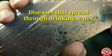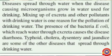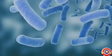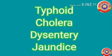Next are diseases that spread through drinking water. Diseases spread through water when disease-causing microorganisms grow in water used for drinking. Mixing of excreta and other pollutants with drinking water is one reason for the pollution of drinking water. The presence of the bacteria E. coli, which reaches water through excreta, causes diarrhea. Typhoid, cholera, dysentery, and jaundice are some of the other diseases that spread through drinking water.